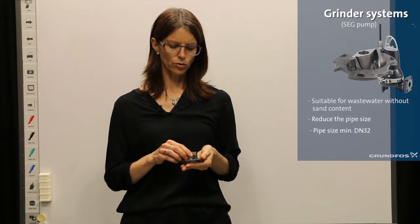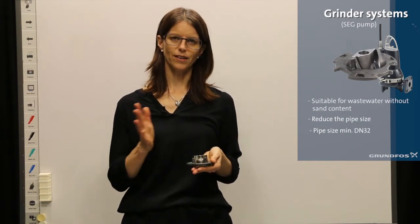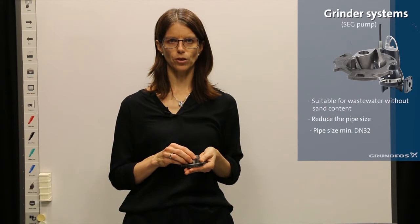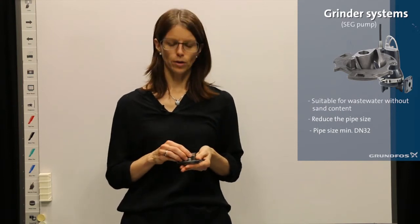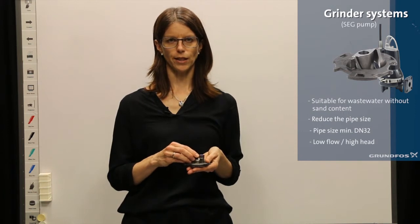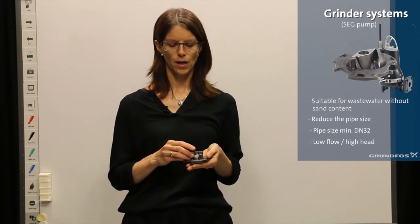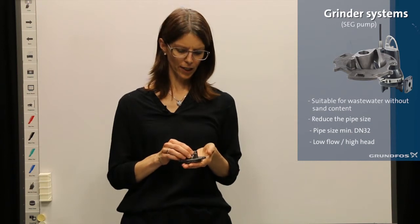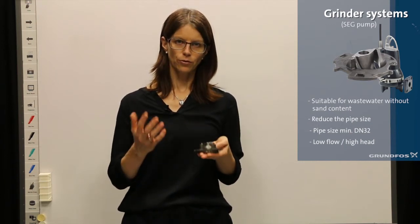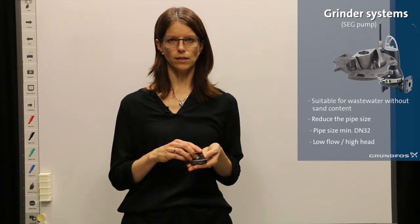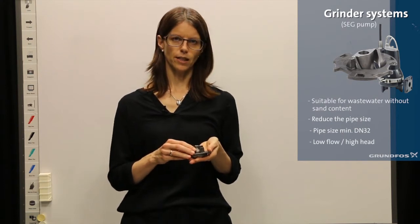You need to run the grinder pump not too far to the right on the performance curve — a maximum of about two liters per second. But this pump is very effective, and if you need to reduce pipe sizes in the system the grinder pump is the optimal solution.